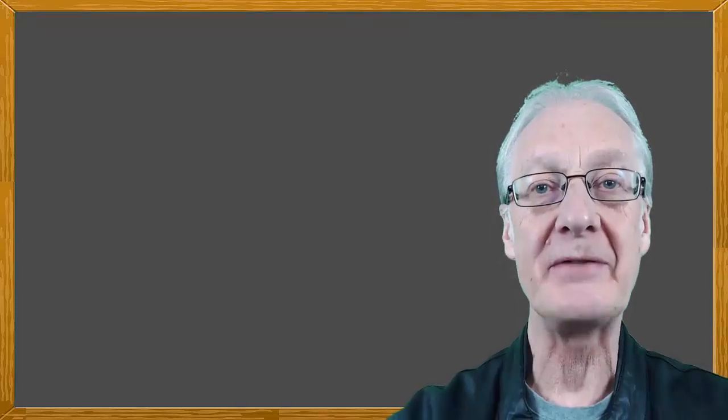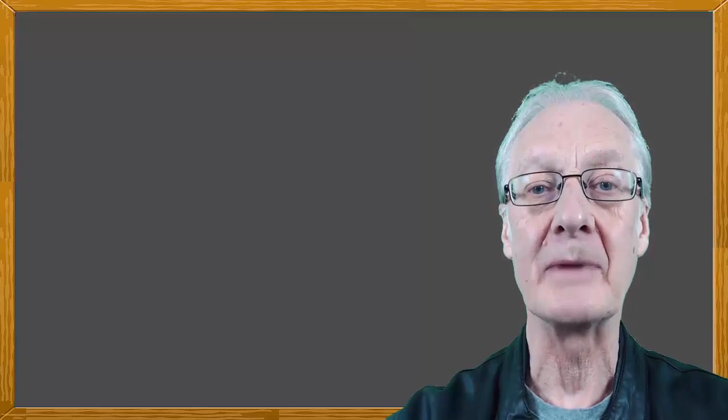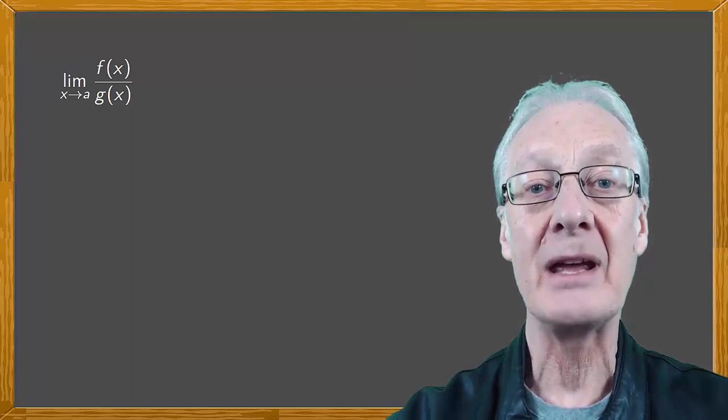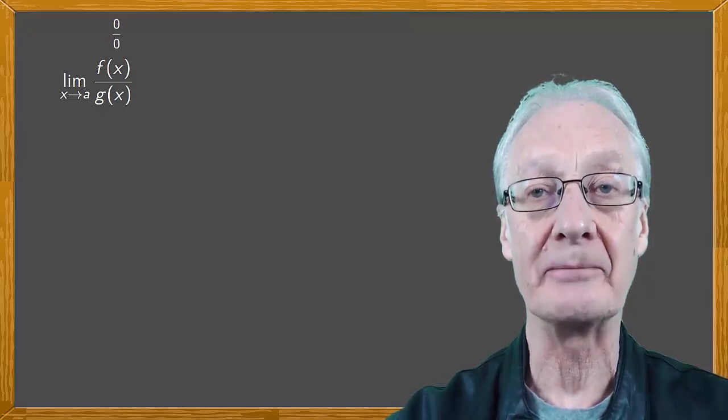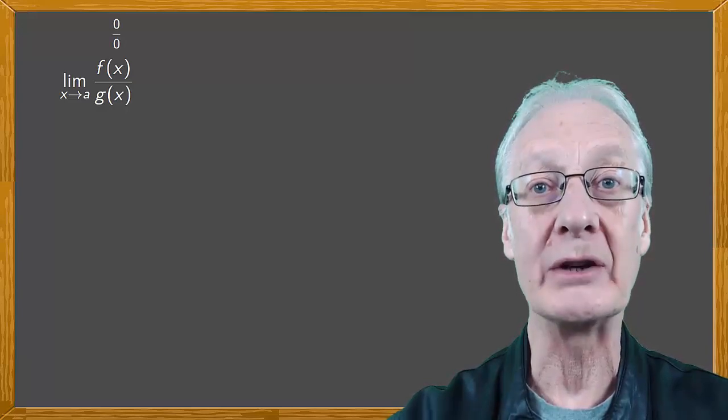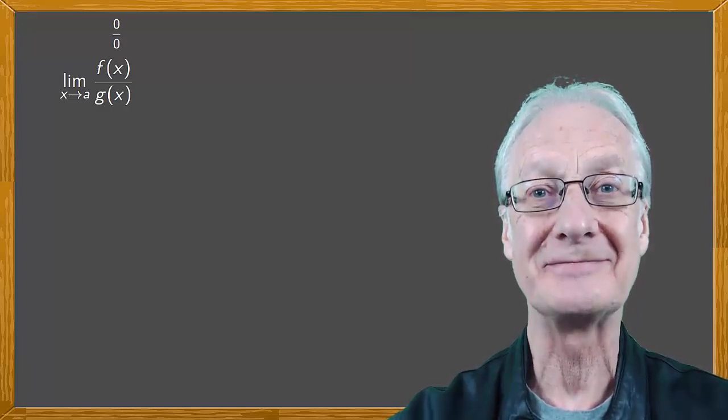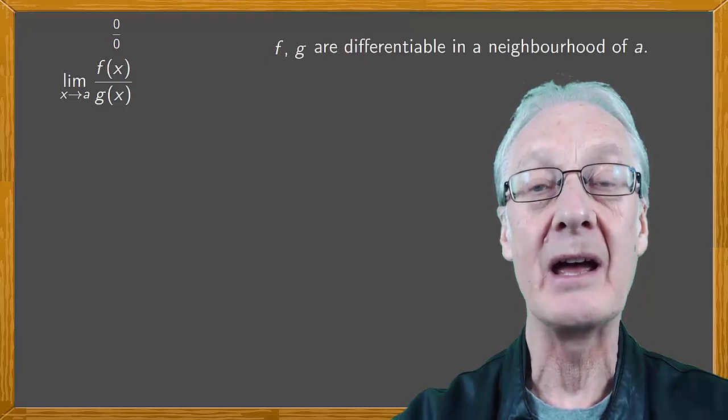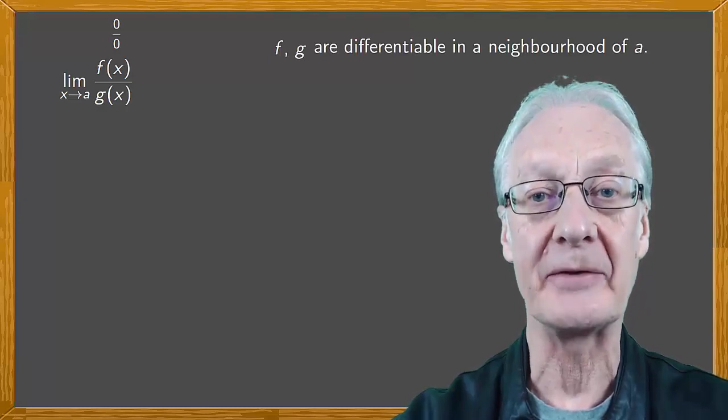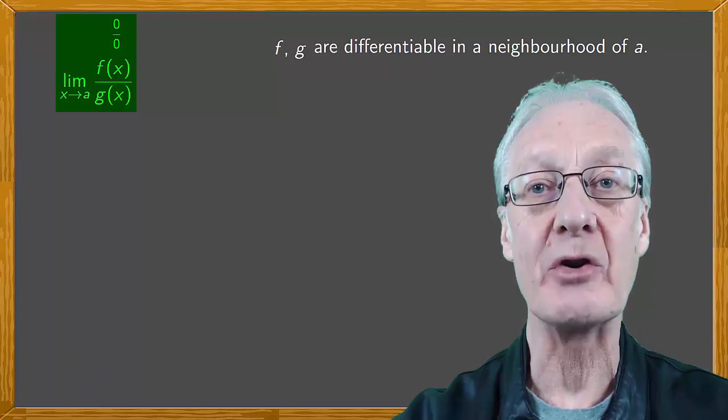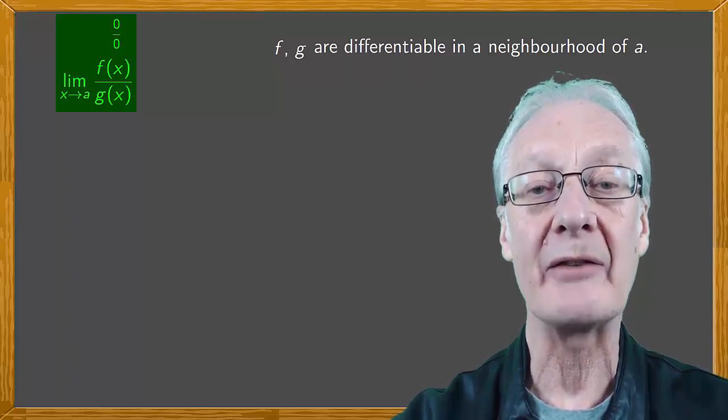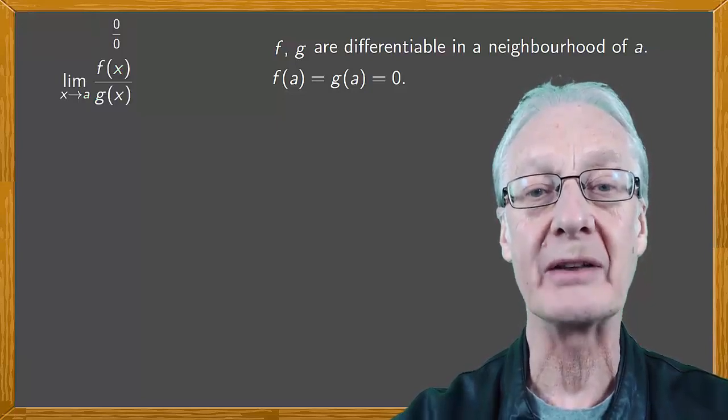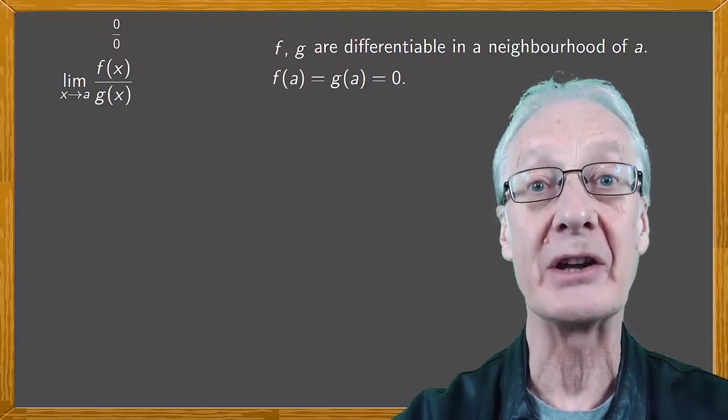We'll focus on the specific indeterminate form 0 over 0. Suppose the limit of f(x) over g(x) as x tends to a is the indeterminacy 0 over 0. We're going to look at what happens without worrying too much about the minor details. We'll assume that the functions f and g are differentiable in the neighborhood of a and are defined at a itself. Because their limit corresponds to 0 over 0, for continuity we have that f(a) equals 0 and g(a) equals 0. We're simplifying the situation but it'll help us to understand things more clearly.